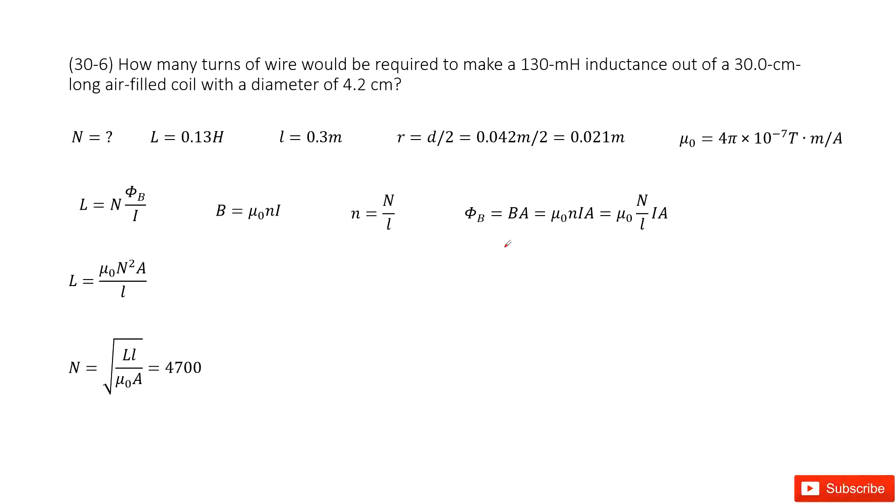We need to know how many turns of this wire. So this is the quantity we need to know, n, how many turns. And the quantities given are about inductance, so we list it there.